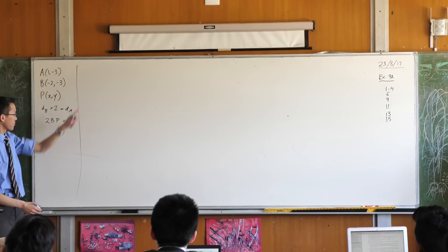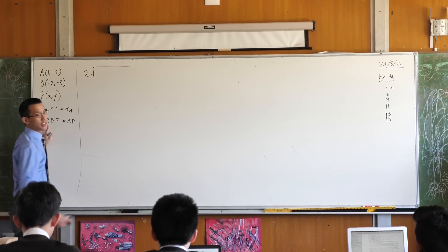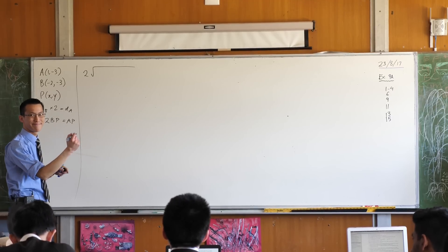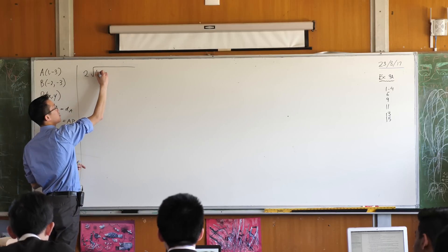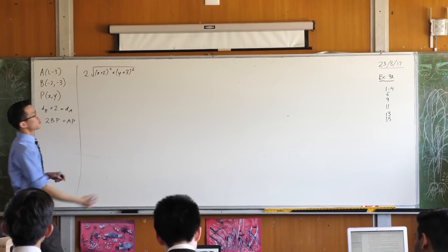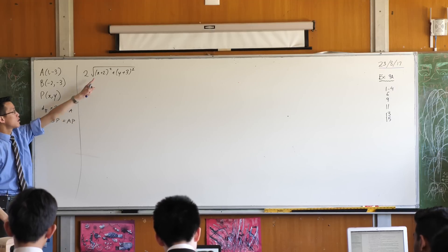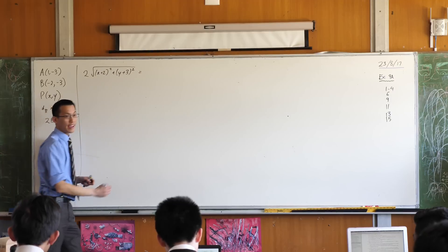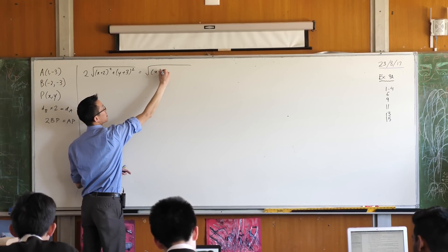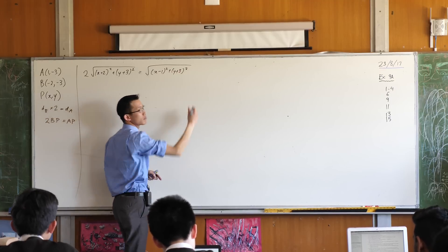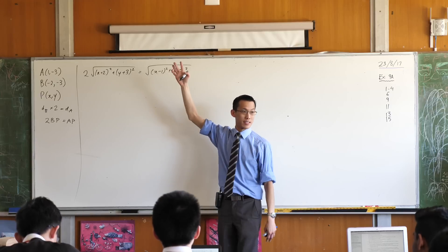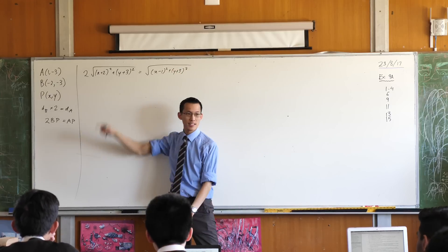Now these are both distances between two points, and we're very good at doing distances between two points. So let's go ahead and actually work out what these numbers are going to look like. I begin with a 2 and then here comes the big square root. What's underneath the square root? X plus 2 squared — because of the double negative — and then plus y plus 3 squared. There's the left-hand side, that's 2 times BP. On the right-hand side, we have the same deal but with slightly different numbers.